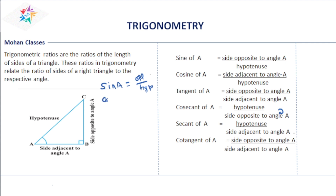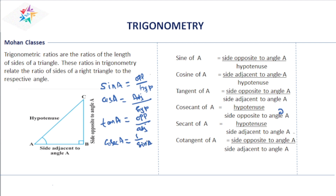Cos A is equal to adjacent side by hypotenuse. Tan A is opposite side by adjacent side. Cosecant A is 1 by sine A — the inverse of sine A — that is equal to hypotenuse by opposite. Secant is equal to 1 by cos A, that is hypotenuse by adjacent. Cot A is equal to adjacent by opposite.